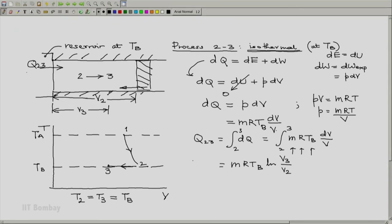Notice that Q23 is, by our sign convention, the heat absorbed by the system. But since V3 is less than V2—it is an isothermal compression process—this is a negative number.